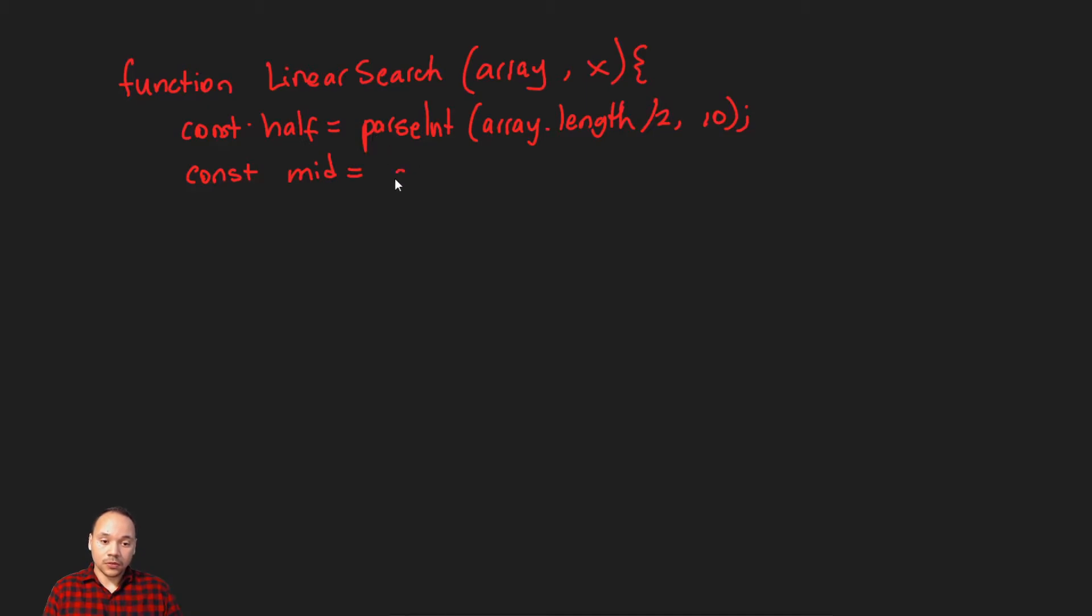So the element in the middle will be the array and the element that we want to take at the half position. And now we just do the comparison. If the middle element is equal to X, we found it. And what do we want to return? We want to return the position, the index of the element.